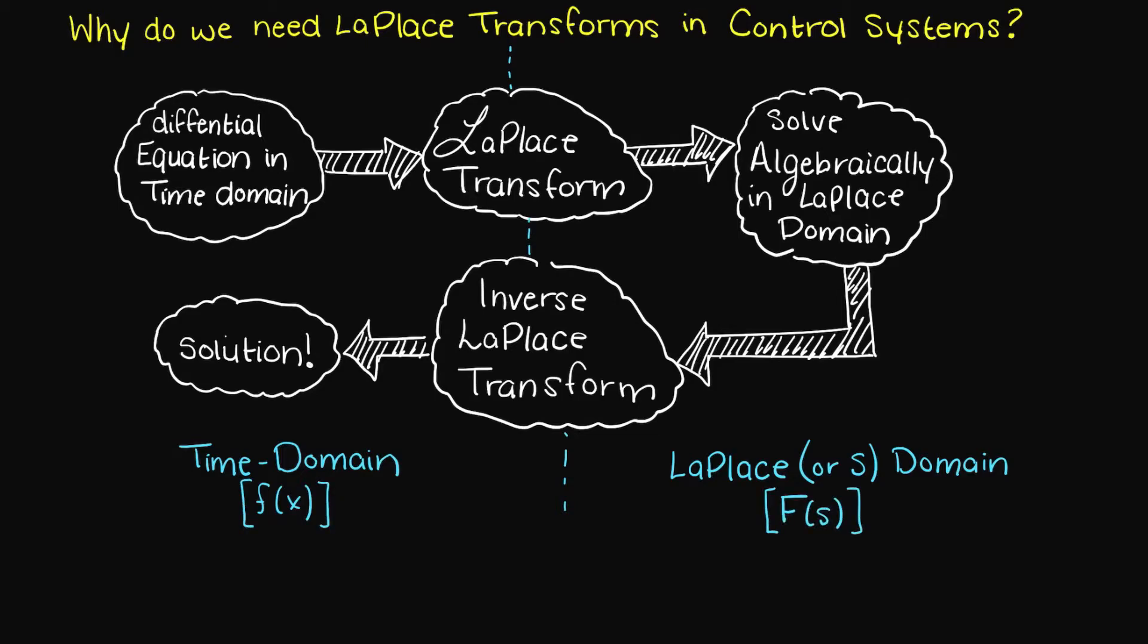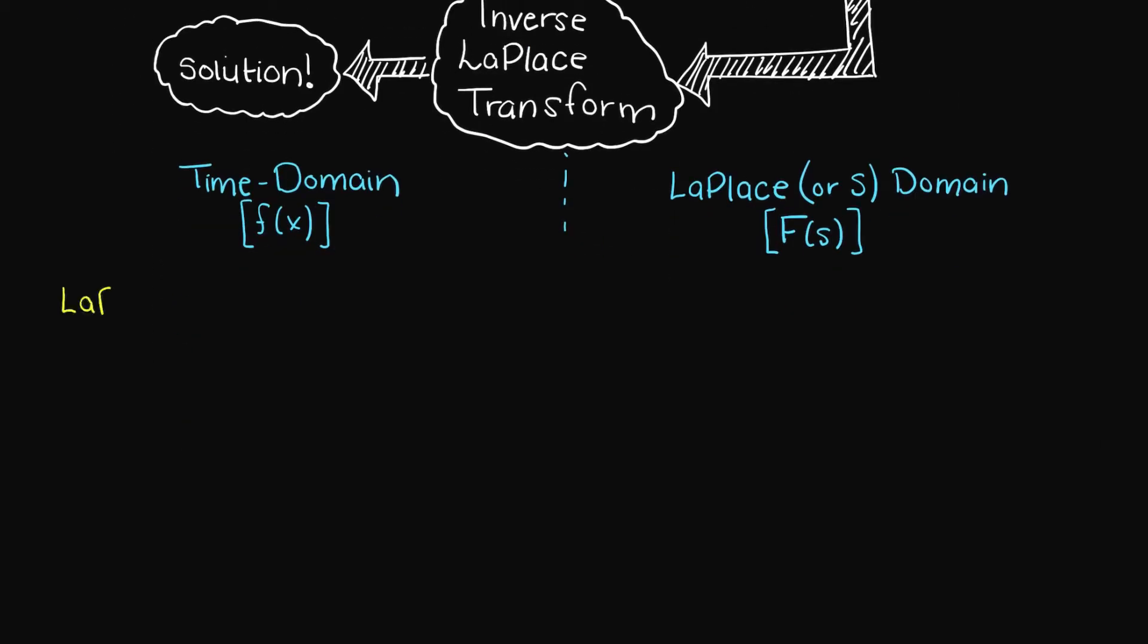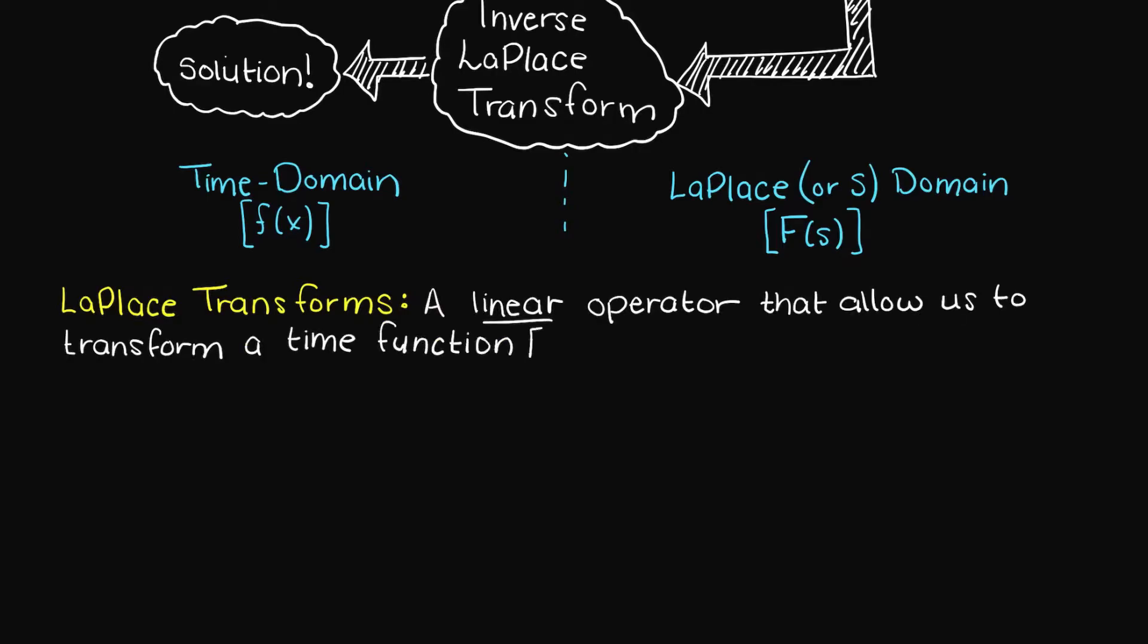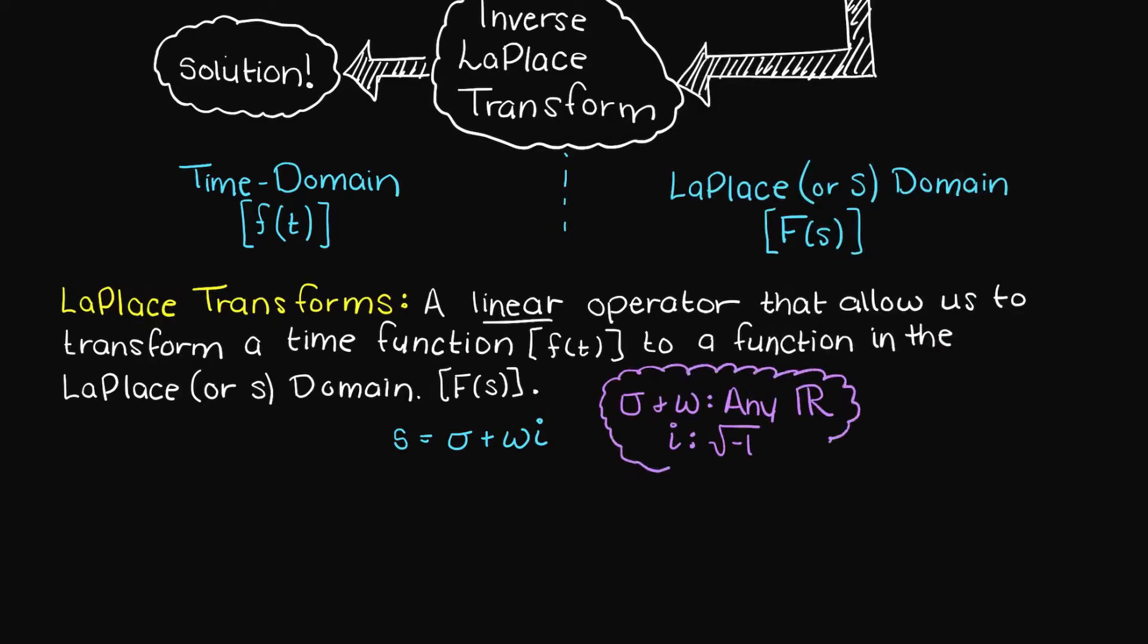Now that we have a rough understanding of why we need Laplace transforms, let's talk more about how they work and how to use them. Laplace transforms are linear operators that essentially allow us to transform a time function, so our input is time, to a function with a complex variable. We typically use s as our complex variable. So s is a complex number which is equal to sigma plus omega i. Sigma and omega are any real numbers and i is the imaginary portion.